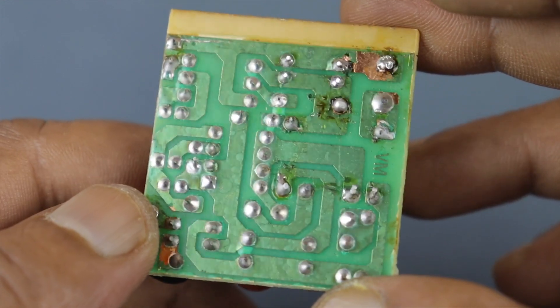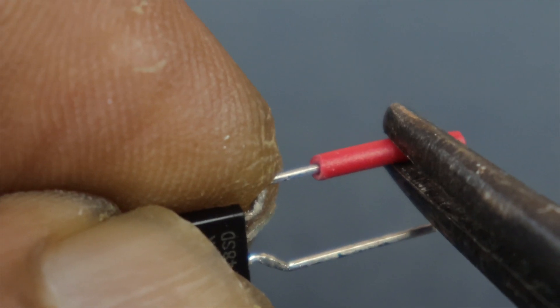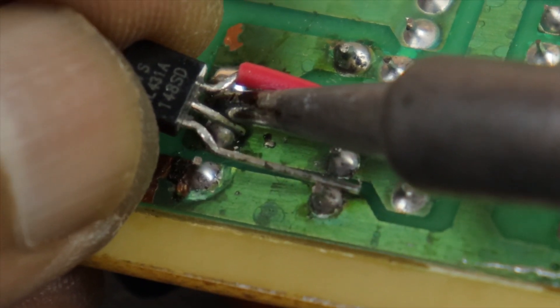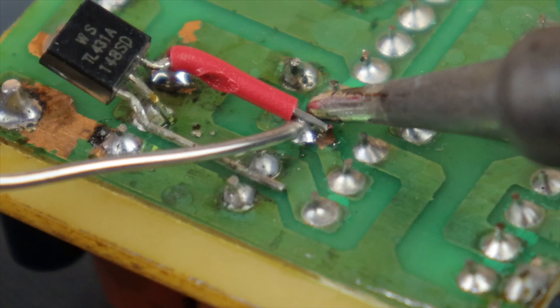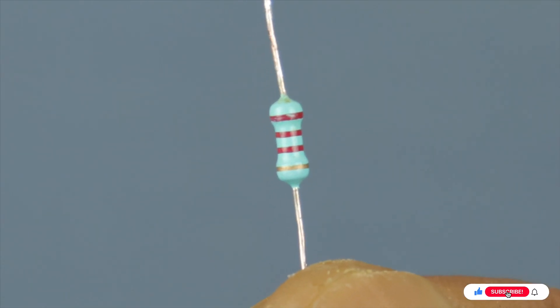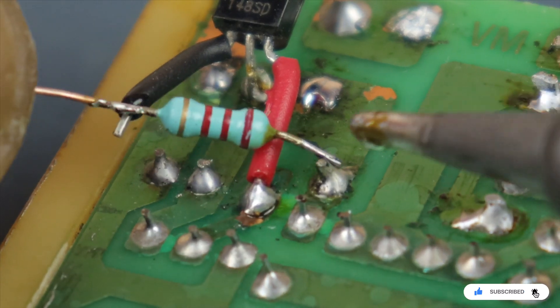But if you want to make it adjustable, then take one TL431 shunt regulator. Connect the middle pin to the ground. Connect pin 3 where the Zener diode was connected. Connect a 2.2K ohm resistor from the ground to the reference pin.